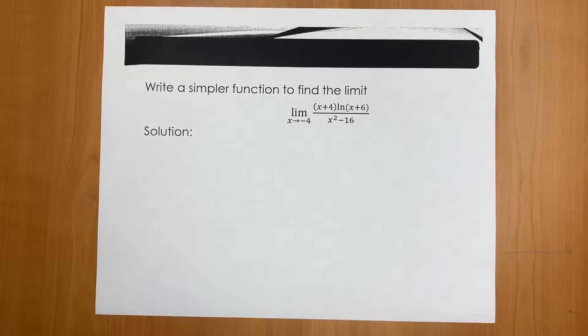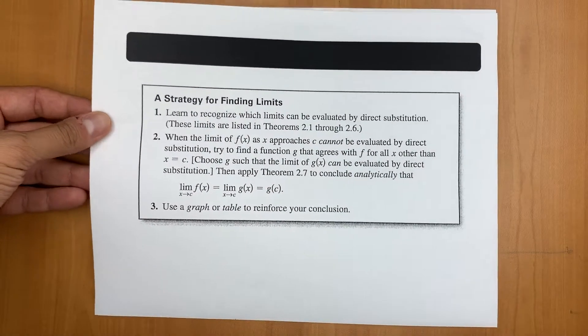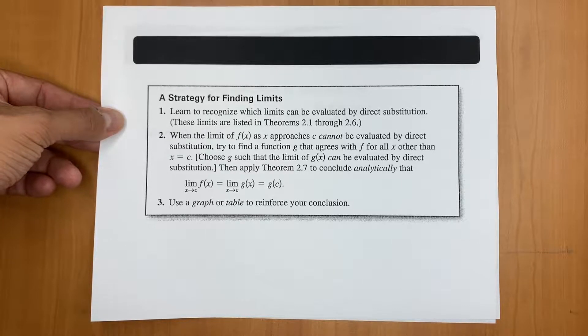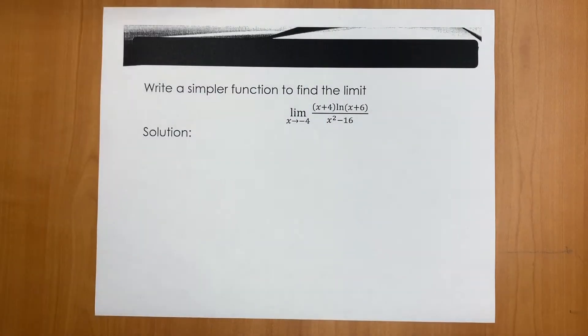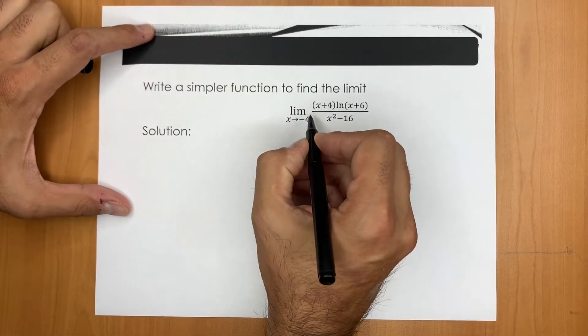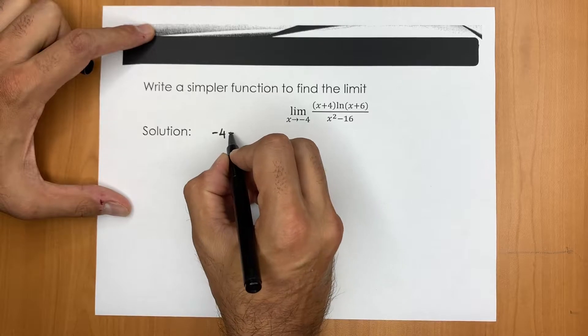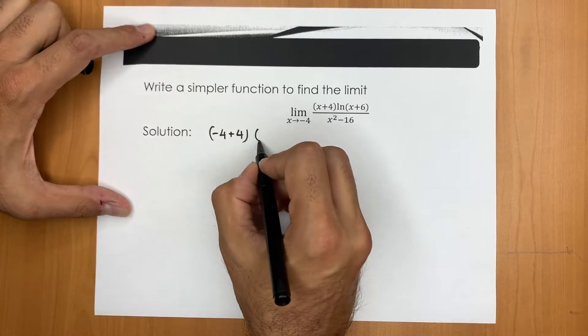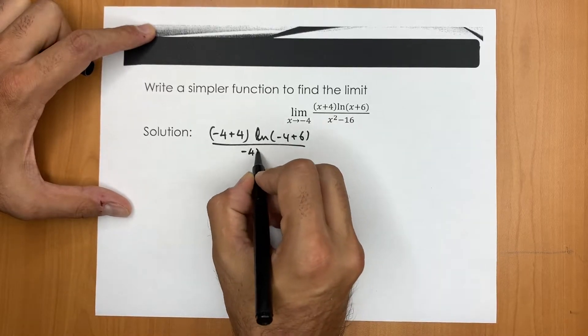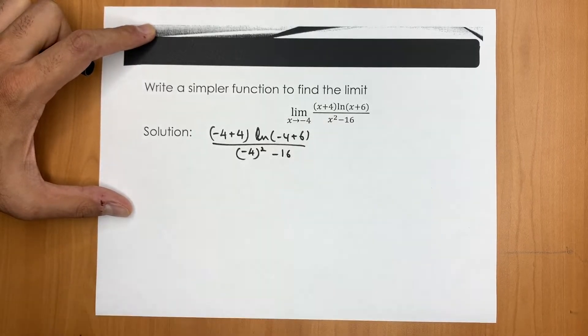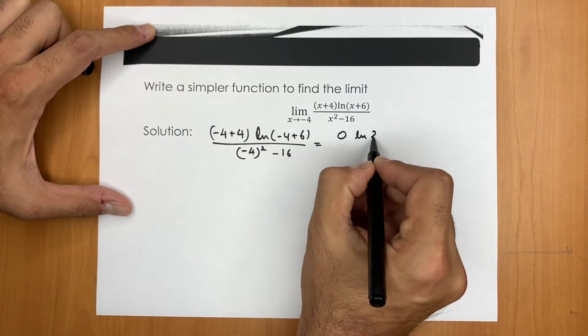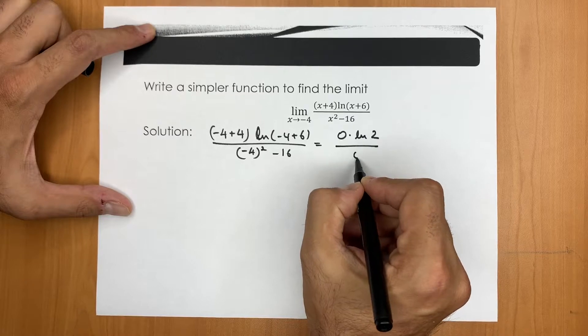Let me just remind you the steps and strategy for finding limits. The first step is all about using direct substitution. So let's try to use direct substitution. I'm going to plug in negative 4 for x. So you're going to have (-4+4)ln(-4+6) and (-4)² minus 16. Well, this adds up to 0 ln 2 divided by 0.